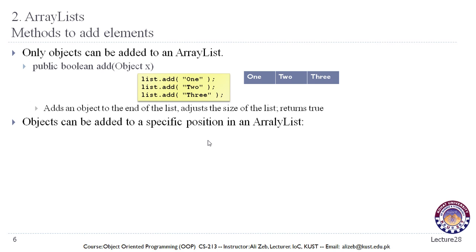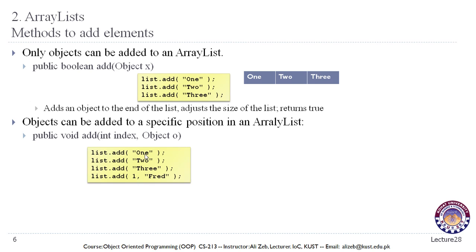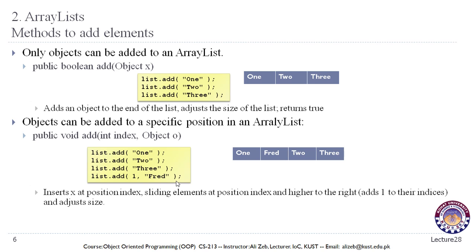Objects can also be added to a specific position in an ArrayList by passing that position to the add method. For example, to add an element at a particular position, you provide that position and the value, and the element will be added at index position one. This inserts x at position index, sliding elements at that index and higher to the right, adds one to their indices, adjusts the size, and increases capacity if necessary.